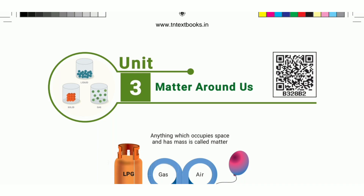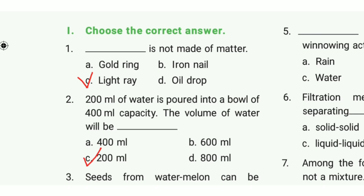In the video, 6th Standard Science Term 1 Unit 3 lesson bookback answers. Choose the correct answer. First one: what is not made of matter? The answer is option C, light ray.